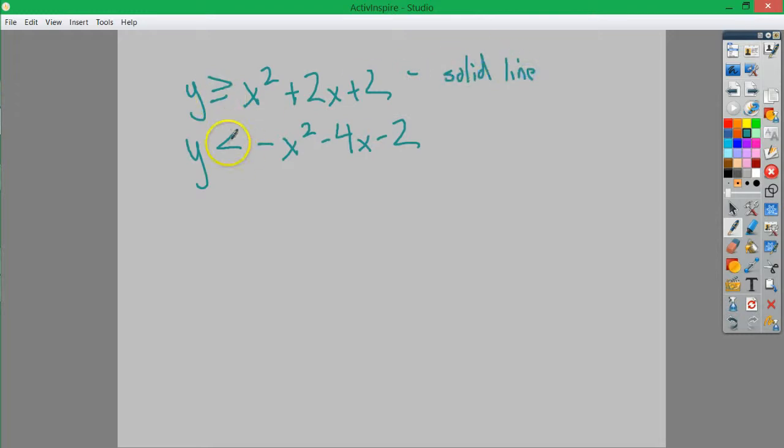So, I should note that this is a solid line because it's got the line underneath there. And this one's going to be a dotted line. I should also say that you have to read the greater than, less than components based on their relationship with y more than anything else.